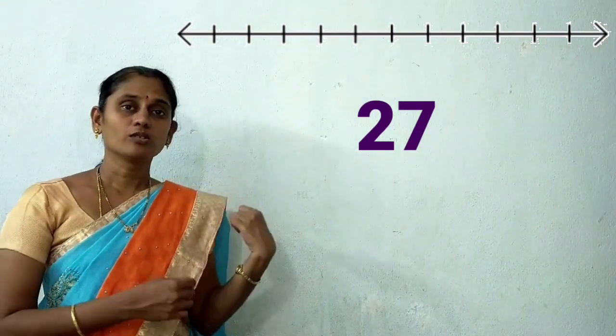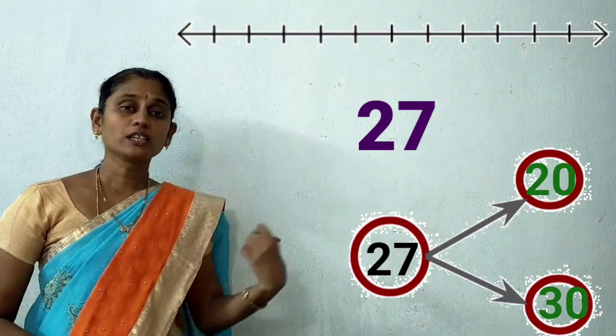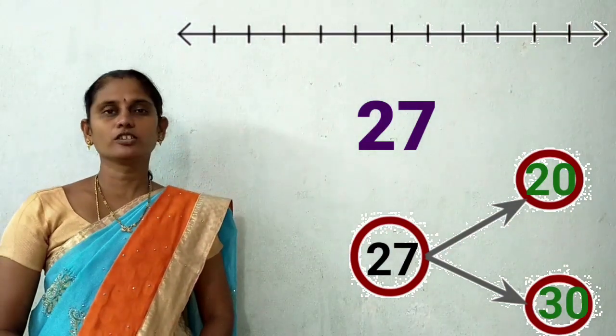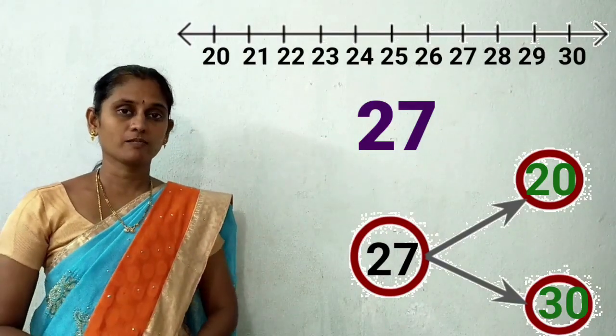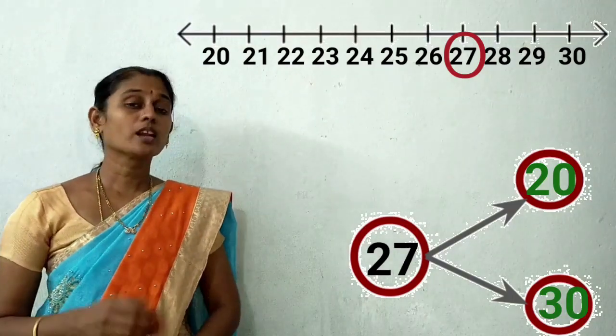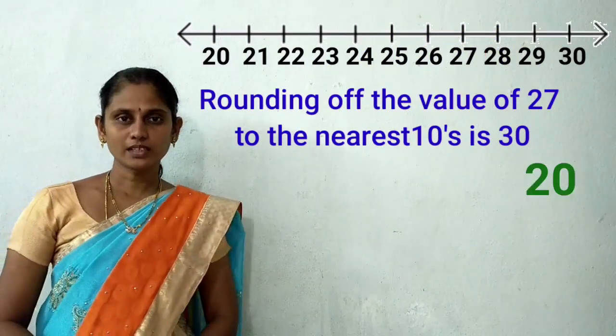Now I am taking another number — 27. As we are using the number line to find rounding values easily, see: 27 lies in between which two tens? Good — 20 and 30. So take the number line from 20 to 30. Our number is 27. Look at 27 on the number line from 20 to 30. Is 27 near to 20 or 30? Yes, it is near to 30. So the rounding value of 27 to the nearest tens is 30.